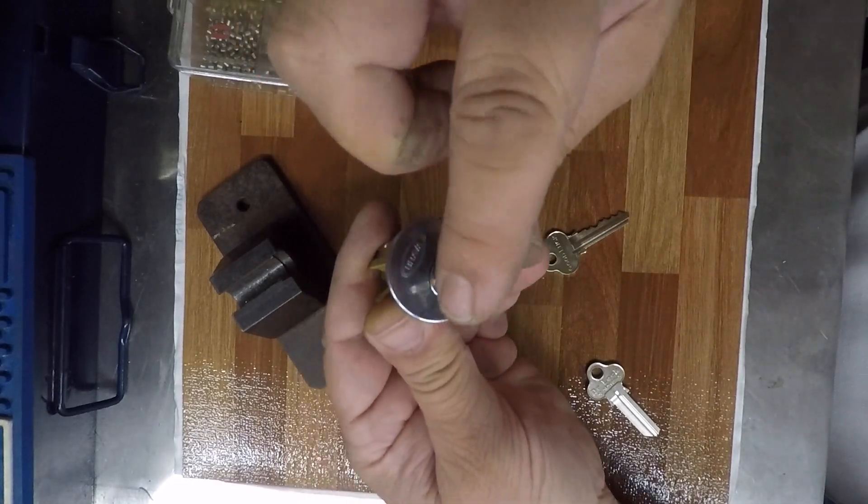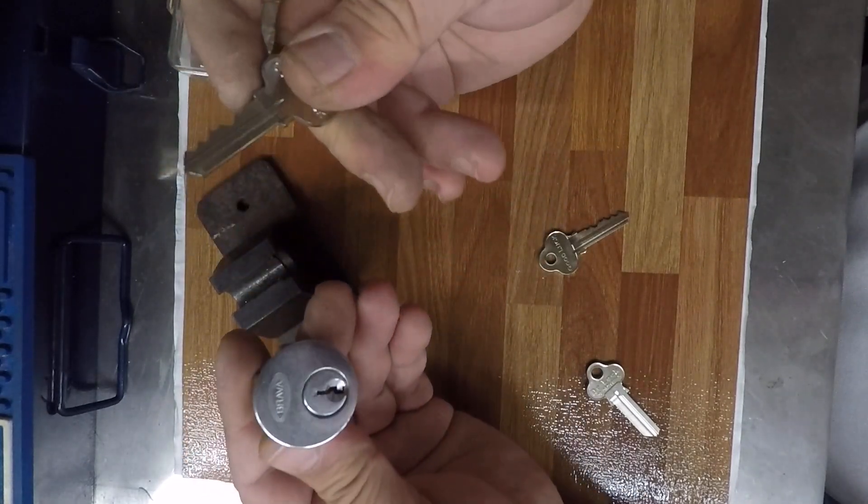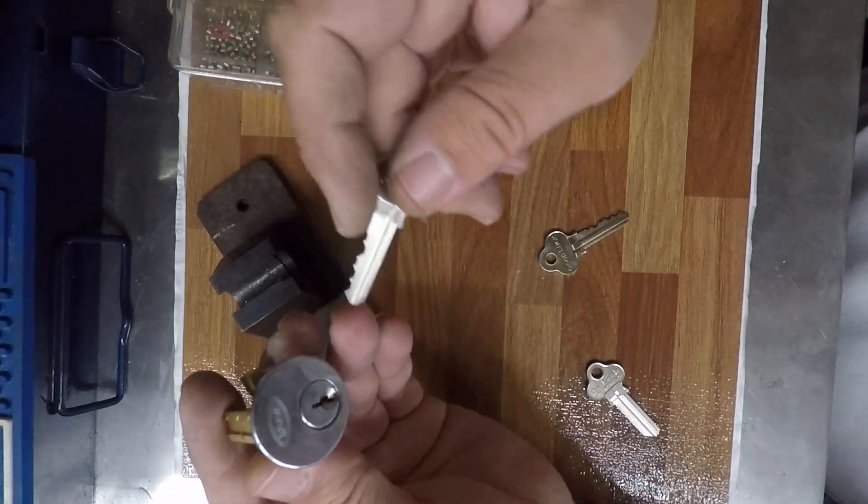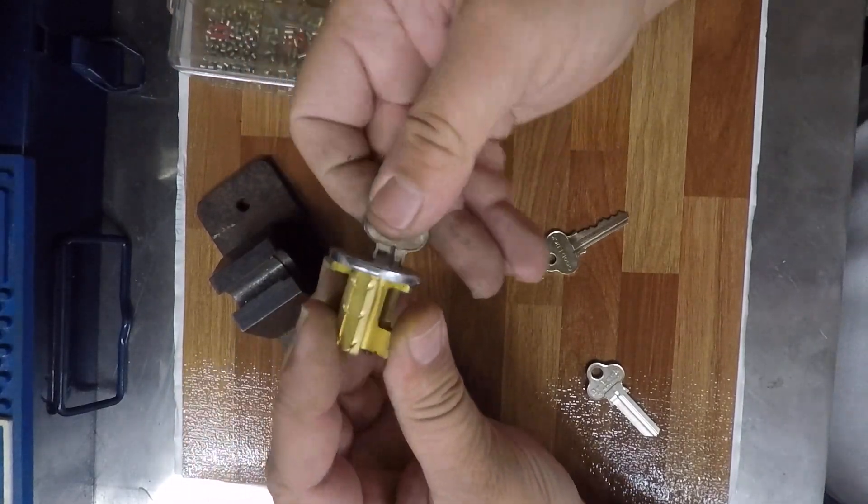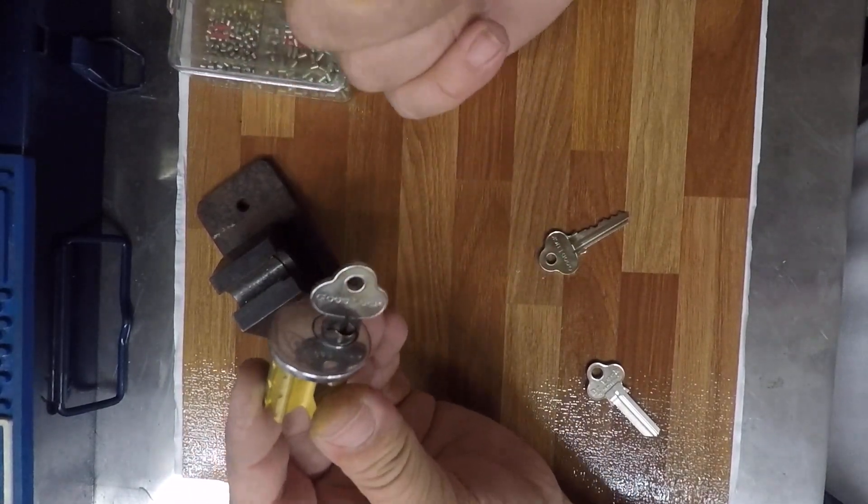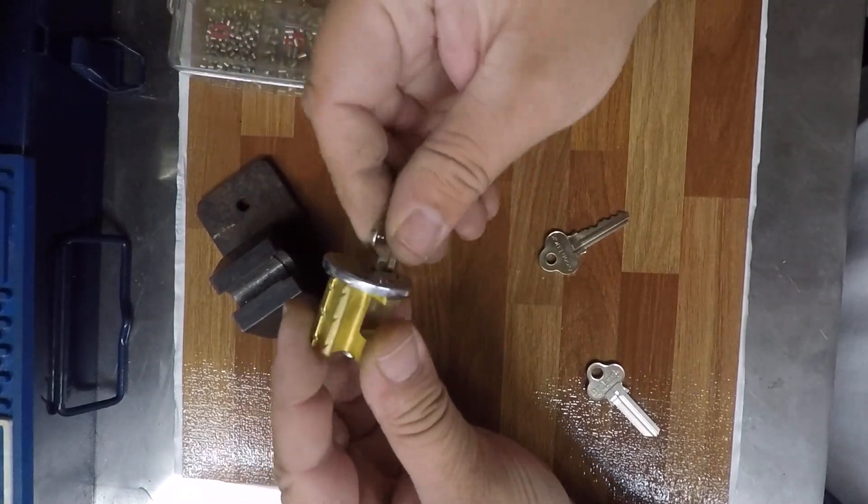There's our lock. Turns nicely. I can get the key out. I don't have the tailpiece on the back, that's why I have to hold it. If I was to pull it while it's turned, all the springs and pins would go everywhere.